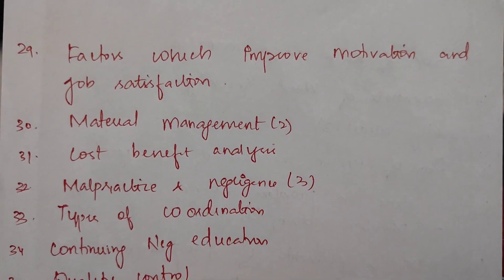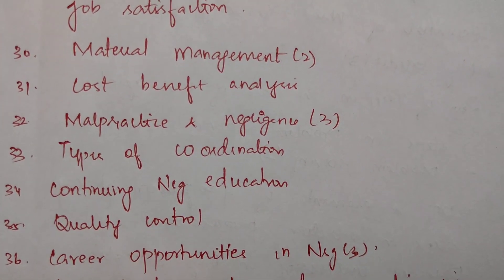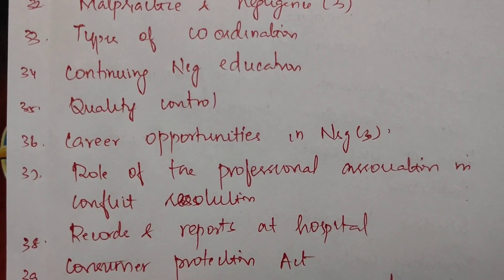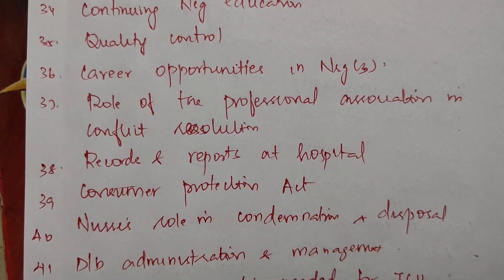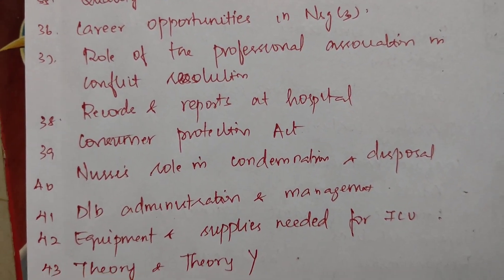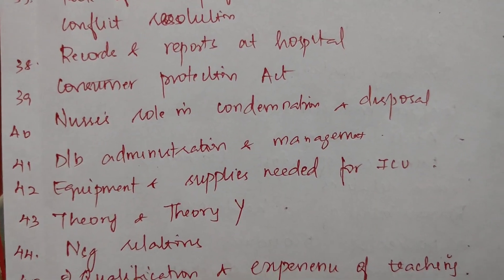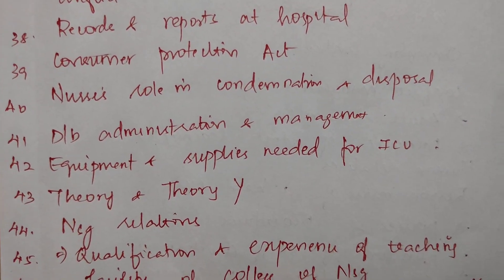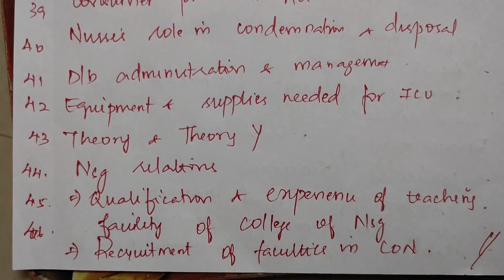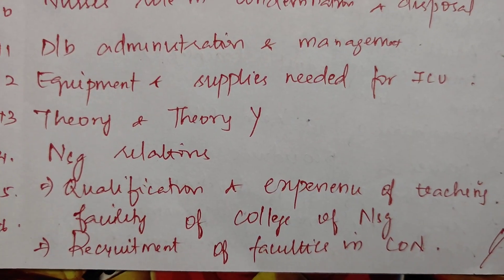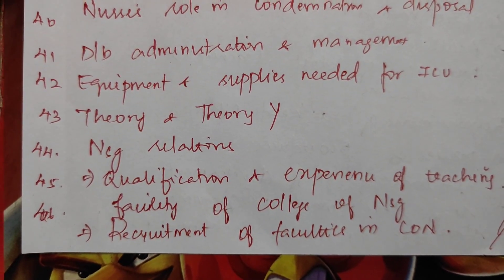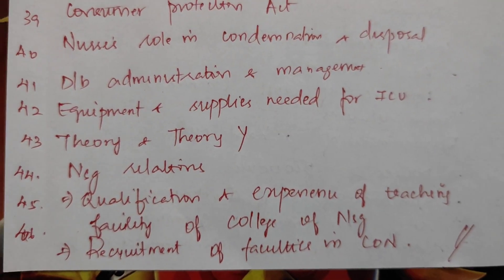Factors which improve motivation and job satisfaction. Material management. Cost-benefit analysis. Malpractice and negligence. Types of coordination. Continuing nursing education. Quality control. Career opportunities in nursing — three times. Role of professional association. Conflict resolution. Records and reports at hospital. Consumer Protection Act. Nurses' role in condemnation and disposal. Differentiate between administration and management. Equipment and supplies needed for ICU. Nursing relations. Qualification and experience of teaching faculty. Recruitment of faculty in college of nursing.